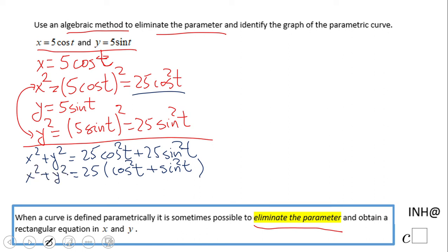So that's the reason our final answer for this problem is x squared plus y squared equals 25. So we really didn't eliminate the parameter.